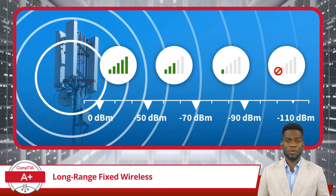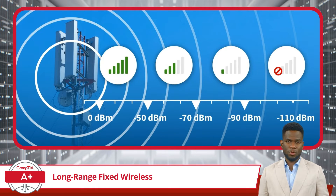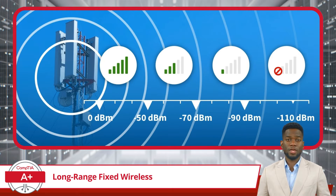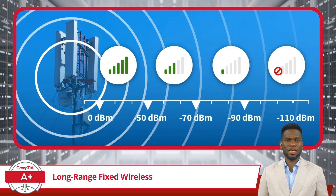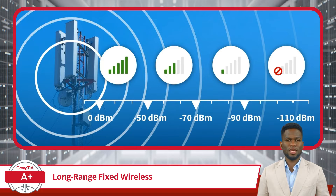Another essential aspect of Long-Range Fixed Wireless is transmission power. This is the strength of the signal sent by the transmitter, measured in decibels relative to 1 milliwatt of energy, or dBm. dBm is a standard unit of measurement for signal strength. A higher dBm indicates a stronger signal. For instance, a signal strength of 0 dBm corresponds to a power level of 1 milliwatt, while a signal at negative 90 dBm is much weaker.